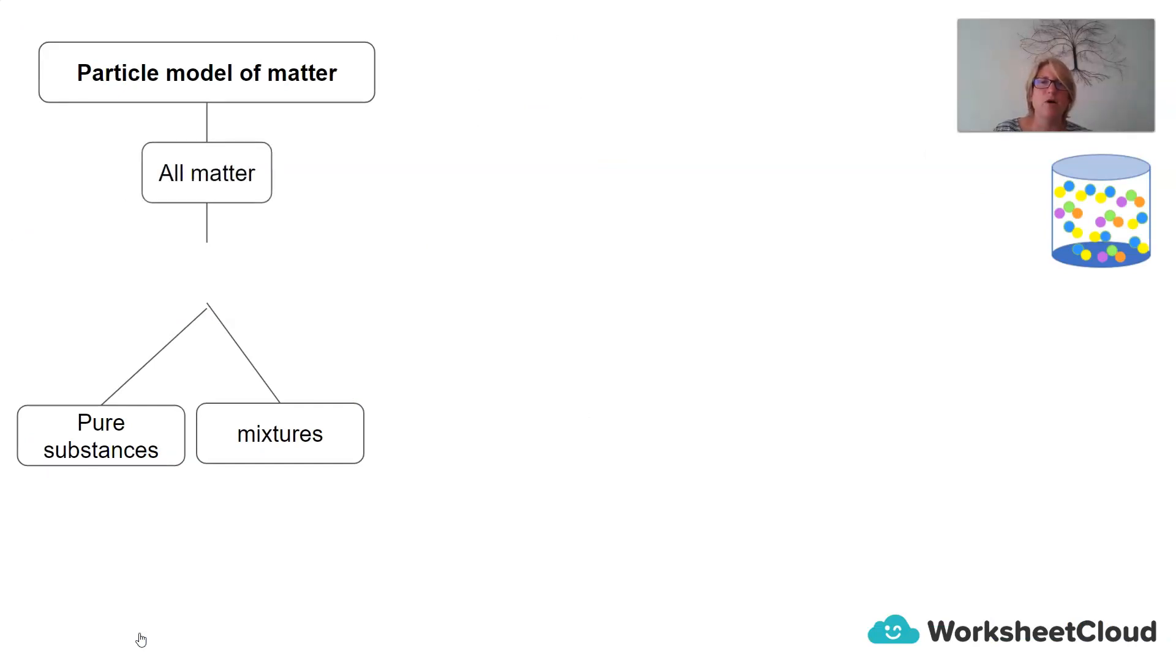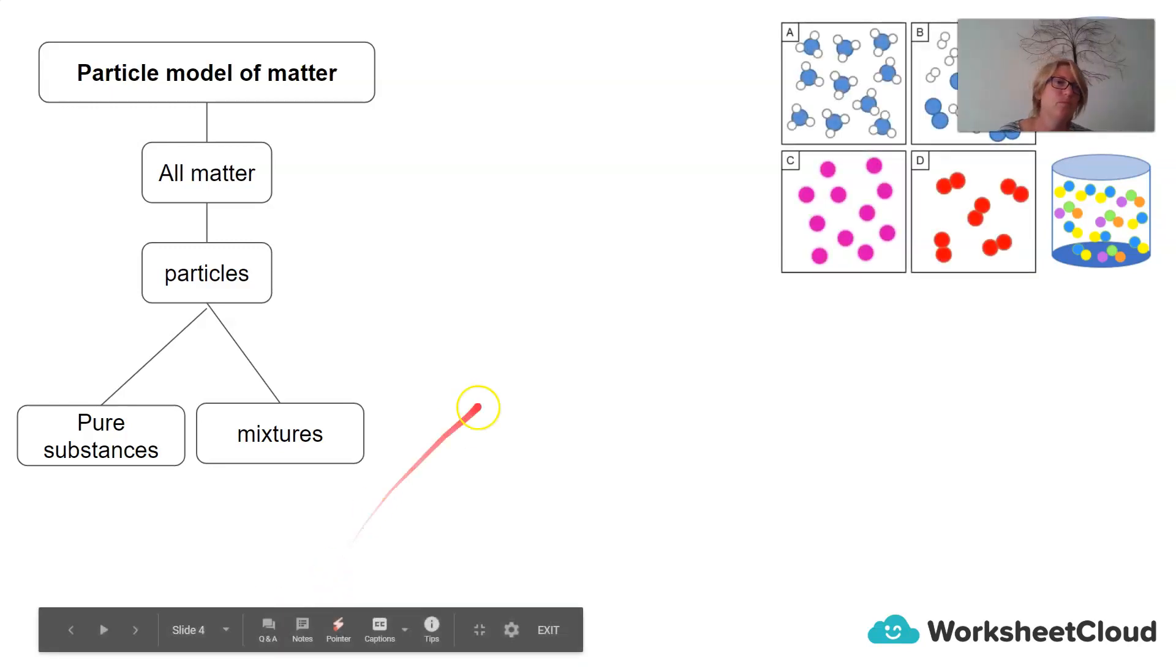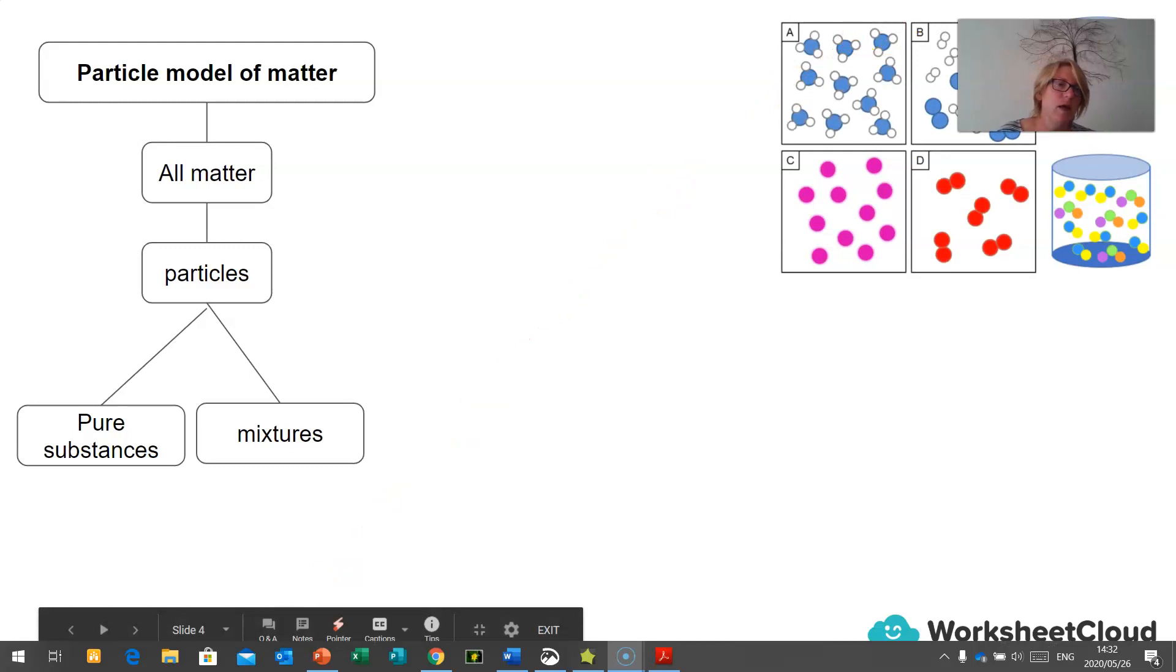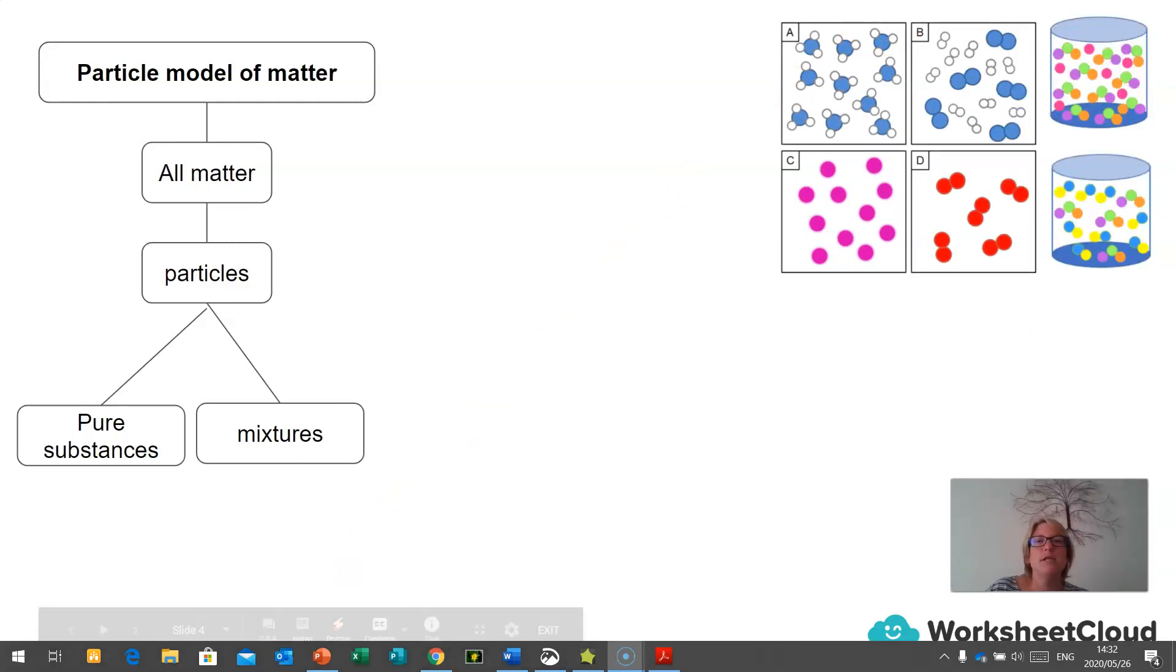So, when we have a look at the particle model of matter, we are referring to all matter. And matter is made up of particles and particles can either be part of pure substances or mixtures. And what's very important is for you to go and have a look at the definitions of pure substances and mixtures and see if you are able to determine whether these pictures here are atoms, elements, compounds, molecules, mixtures, or pure substances.